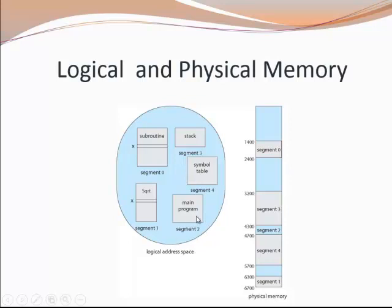Since this is a logical address space, we have to map all the segments into a physical address. For example, the main program is mapped into physical memory at location 4300. Suppose the main program contains 400 lines of code — when we add the total number of instructions to the base address, we get the last address. So adding 400 to 4300, we get the last address as 4700. In this way, all the segments are mapped into memory.